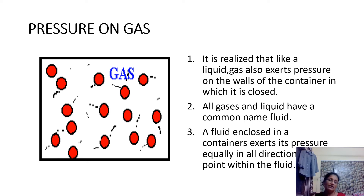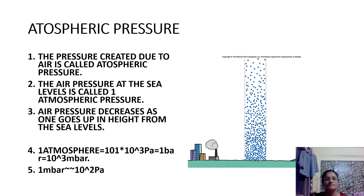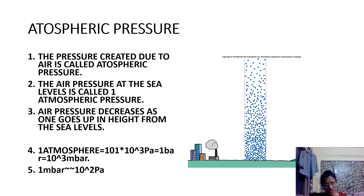The next topic is atmospheric pressure. Air surrounds the Earth from all sides, as everybody knows. This layer of air is called the atmosphere, and the pressure it exerts is called atmospheric pressure. The atmosphere exists to about 16 kilometers in height.